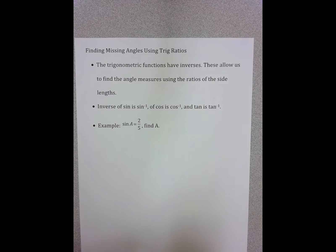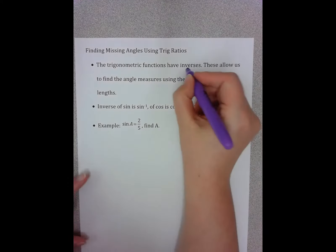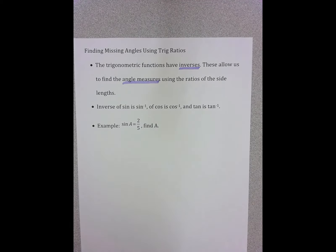These notes are on finding the missing angles using trig ratios. Trig ratios have inverses, and the inverses allow us to find angle measures.